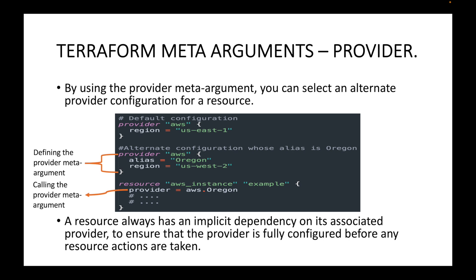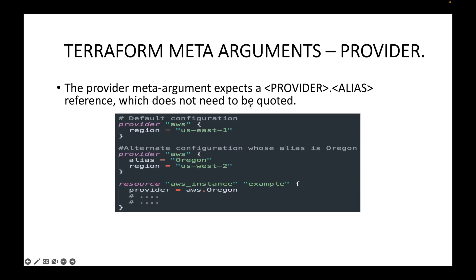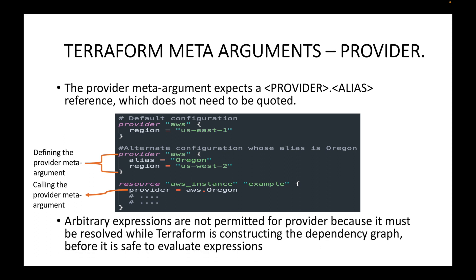The provider meta argument expects a provider dot alias reference which does not need to be quoted. When calling the provider meta argument, it should be the provider name — AWS in this case — followed by the alias name, and it must be unquoted. Arbitrary expressions are not permitted for provider because it must be resolved while Terraform is constructing the dependency graph, before it is safe to evaluate expressions. The value should be known before we start executing.